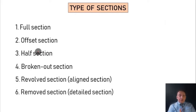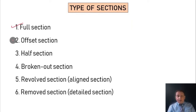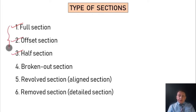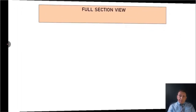What types of section views do we have? We have full section, offset section, half section, broken out section, revolved section, and removed section. The most widely used in industry and engineering drawing are full section, offset section, and half section. I will demonstrate each one of them.